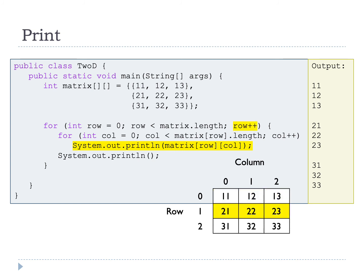After completing the inner for loop, it exits and increments the row by 1 to row 1, repeating the inner for loop through all columns in row 1, then the same for row 2 going through column 0 until column 2. Because we have System.out.println in the outer for loop, that's why in the output there is an empty line between rows, shown by the red arrows. Try running this code and see if you get the same output.